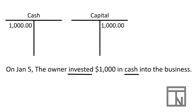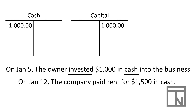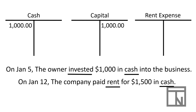Let's look at another transaction. On January 12th, the company paid rent for fifteen hundred dollars in cash. The two parts are rent on one side and cash on the other. Rent is an expense account, so let's add a T-account for rent expense. Expenses when they increase are a debit, so we debit rent for fifteen hundred dollars. Cash is decreasing, so it would be credited for fifteen hundred dollars.